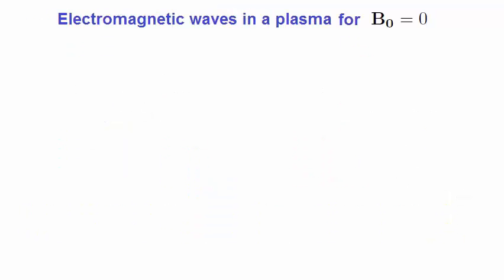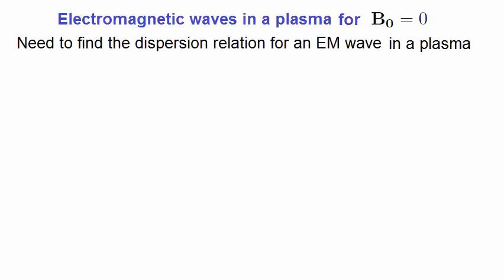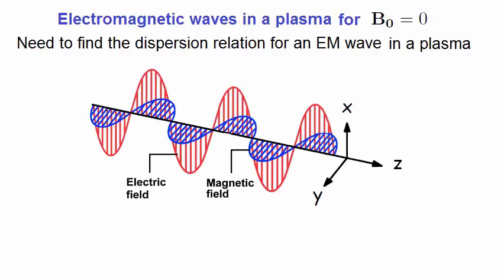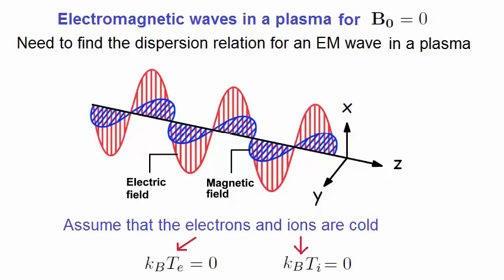Let's now look at the behaviour of electromagnetic waves as they pass through a plasma. We'll consider the simplest case where the applied magnetic field is zero. Our main aim here is to obtain the dispersion relation of the electromagnetic wave. We'll assume that the wave is travelling along the z-axis with its electric field vector along the x-axis and the magnetic field vector along the y. Again, here we'll assume that the electrons and ions are cold for simplicity.